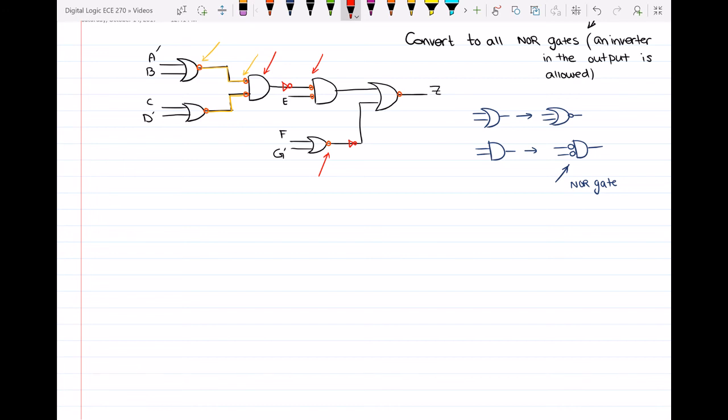The next step is that if there is a variable which is driving an inverted input, so basically if you look at variable E, it is driving an inverted input, I have to go ahead and complement that variable. And since here they said that an inverter in the output is allowed, then we have to place an inverter here as well so my output won't be inverted.